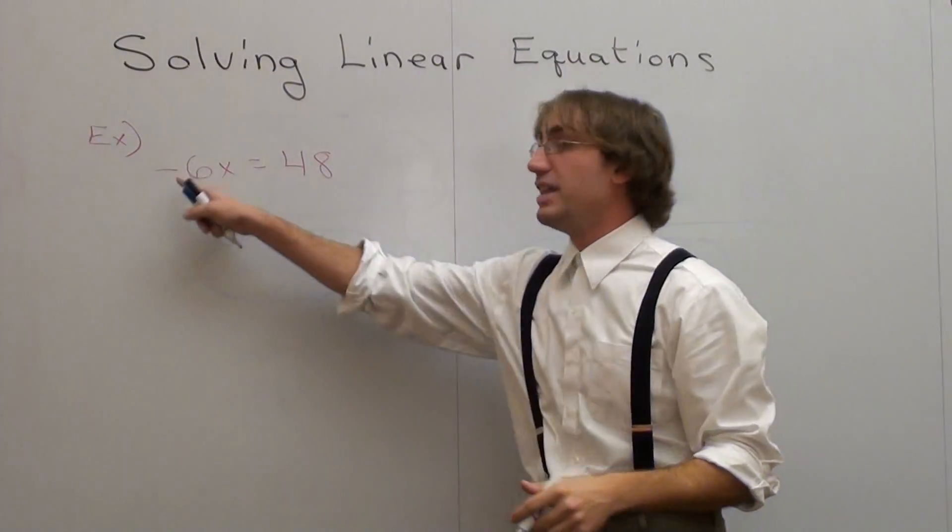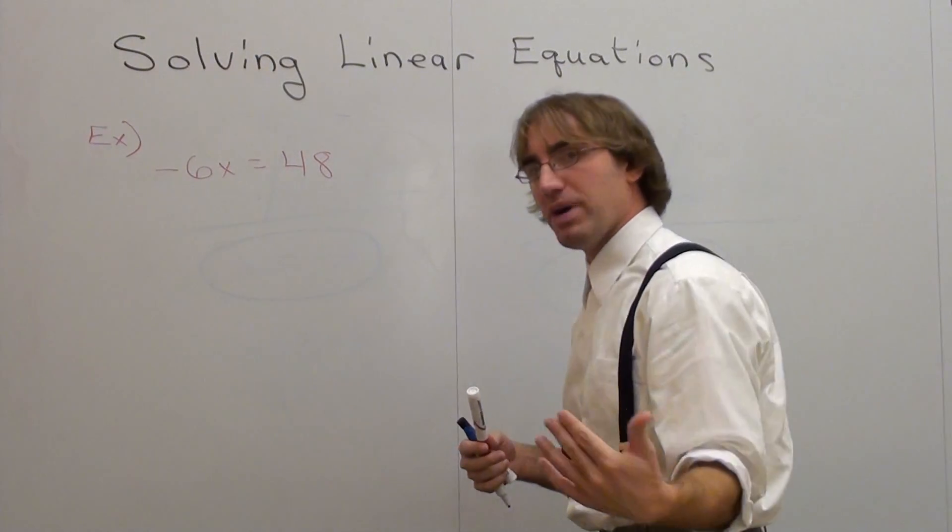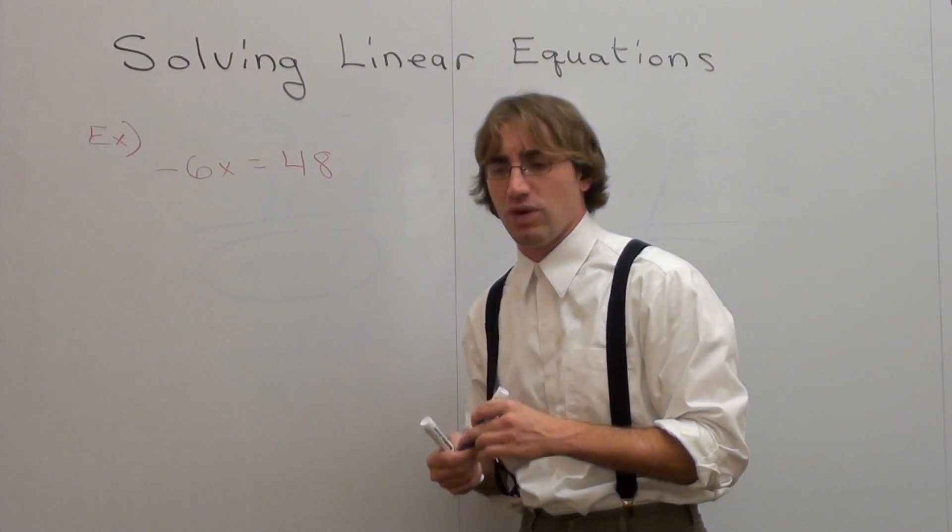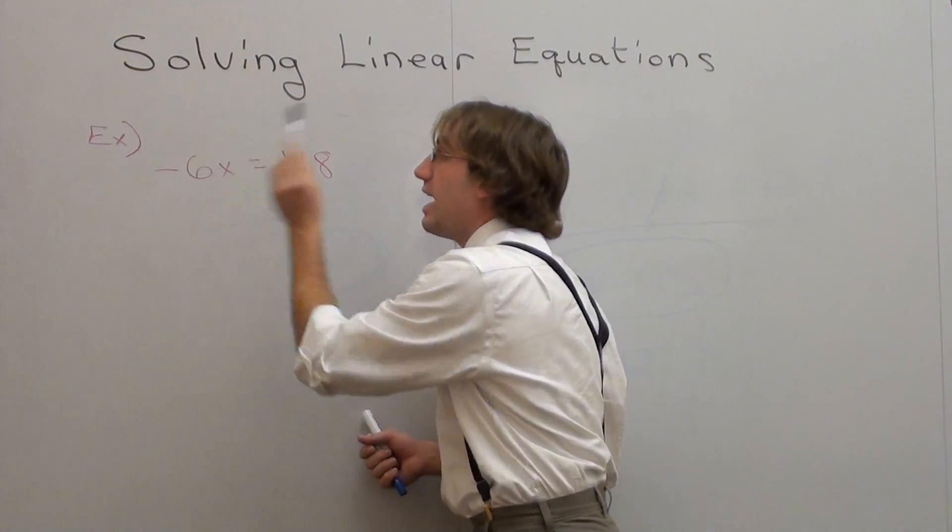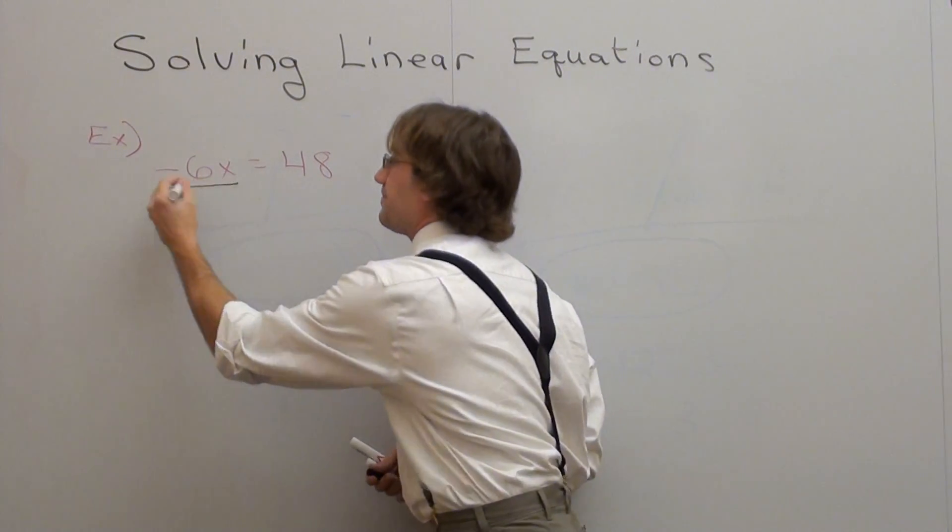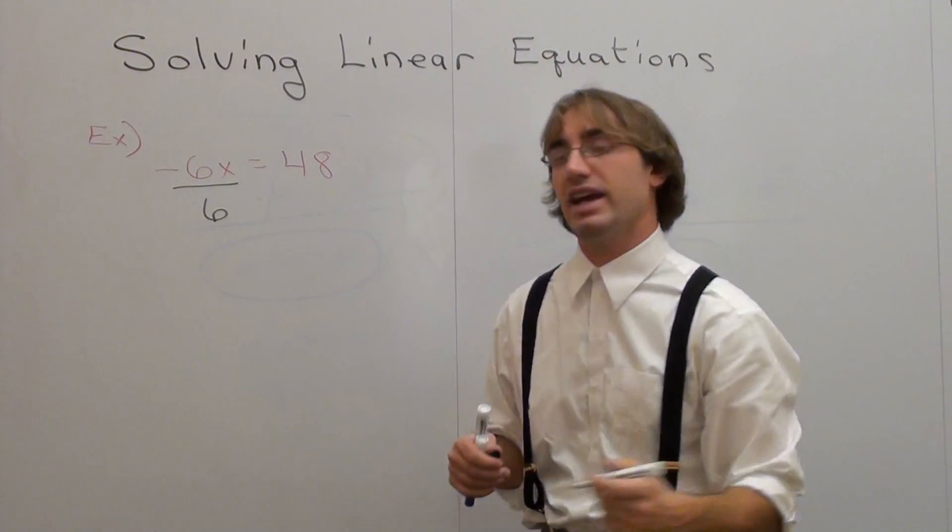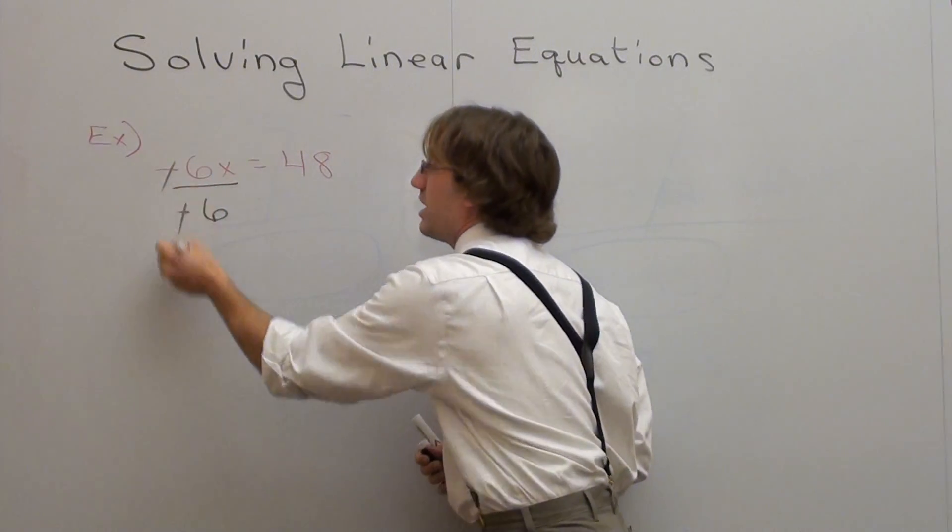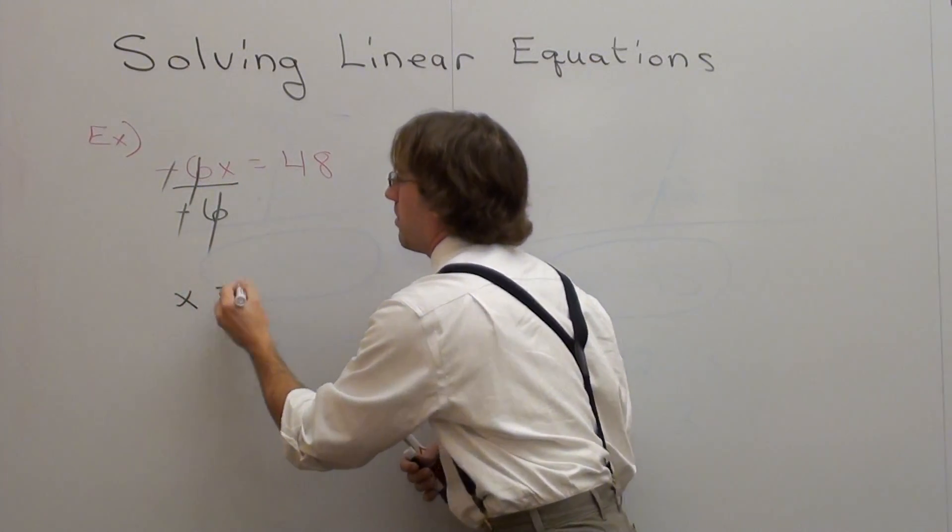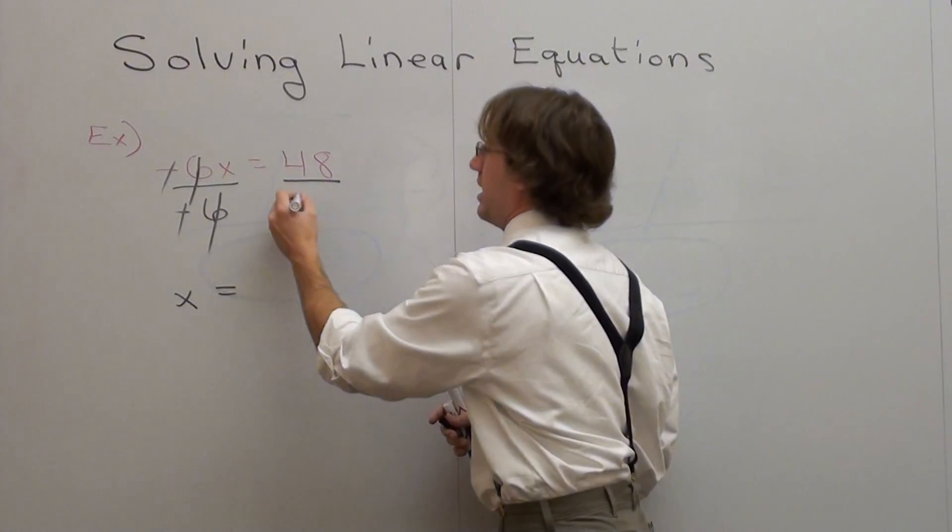My next example reads negative 6 times x equals 48. Again, the x is not by itself. Now, I have some students who would add 6 to both sides and they say, oh, x equals 54. That's not correct. It's negative 6 times x. How do you get rid of multiplication? You divide. Now, I have to divide the number that's with x. And in this case, it's not just a 6, it's a negative 6. The negative will cancel out the negative. The 6 will cancel out the 6. And all I'll be left with is an x. But what I do on one side of the equation, I better do on the other side. So I divide 48 by negative 6.